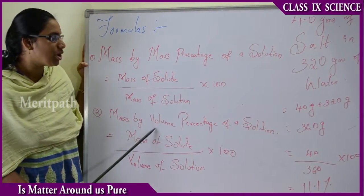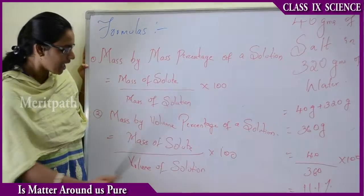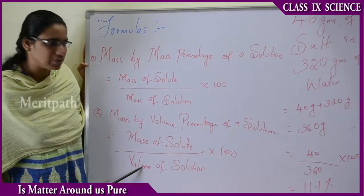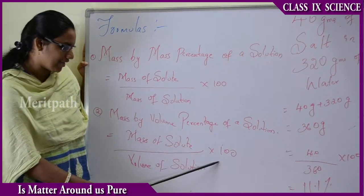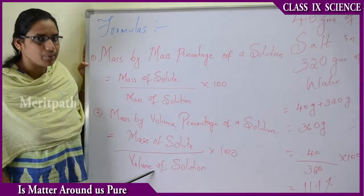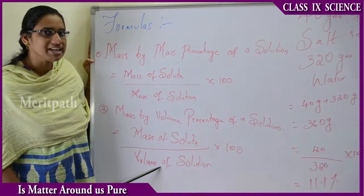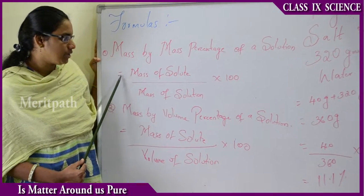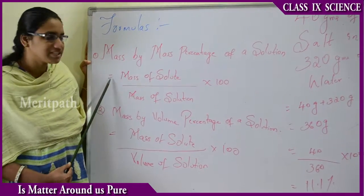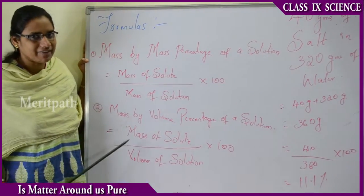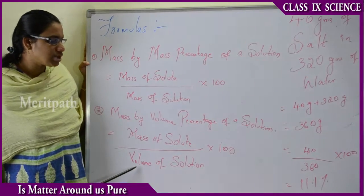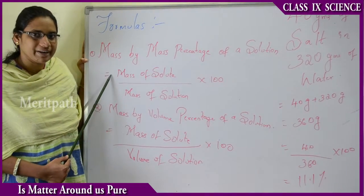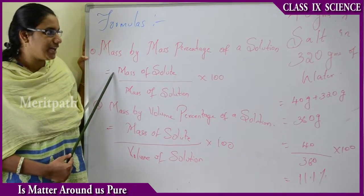The mass by volume percentage of a solution is mass of solute divided by volume of solution, into 100. The volume of solution includes both solvent and solute. These formulas are used according to the type of solution: for liquid solutions we take volume, and for solid solutions we take mass as a unit.